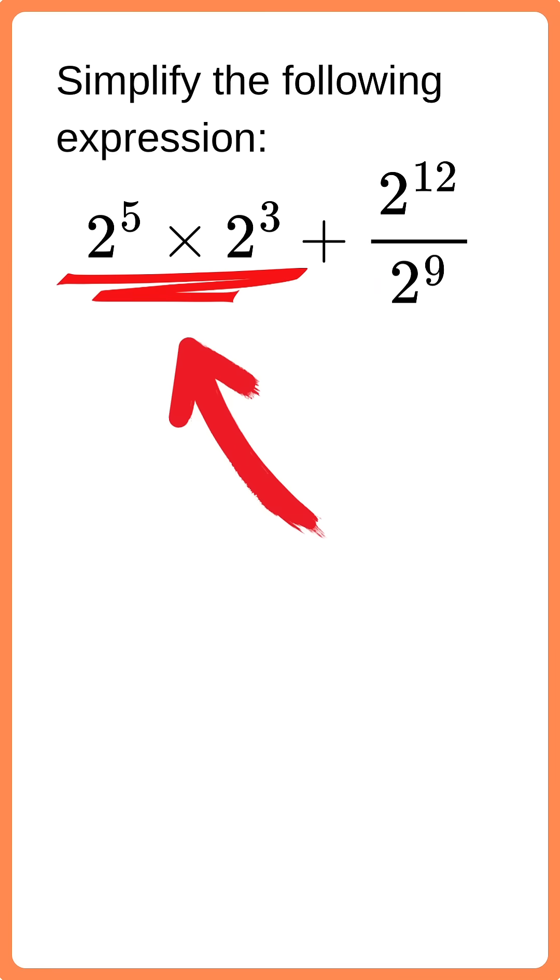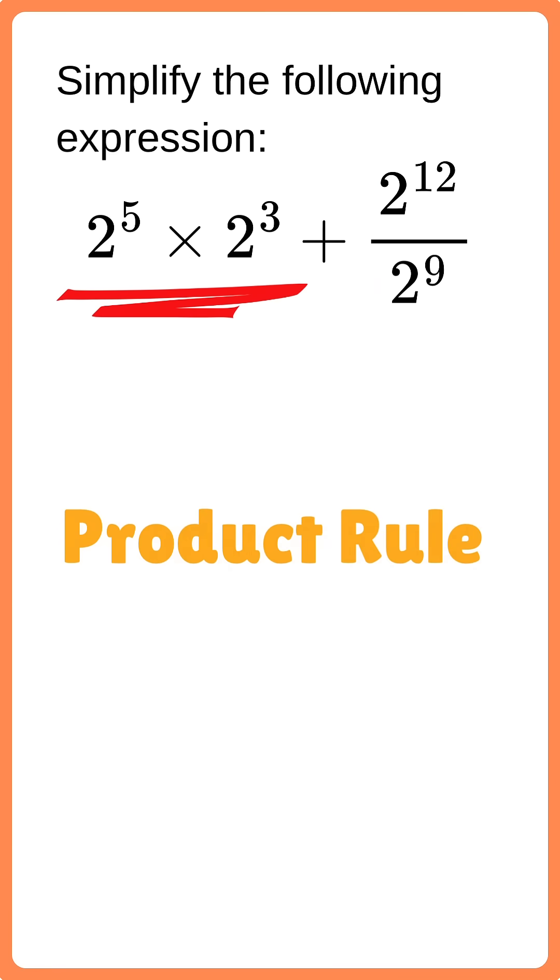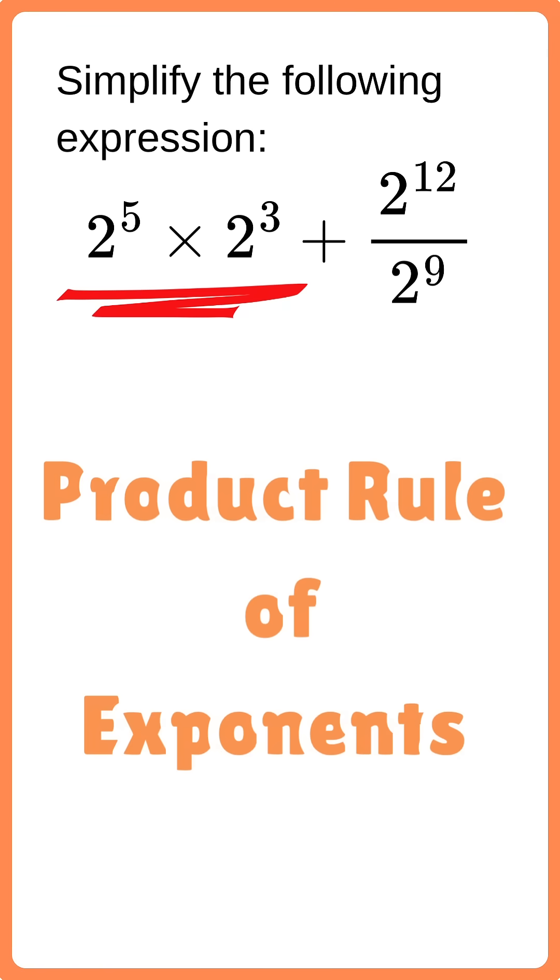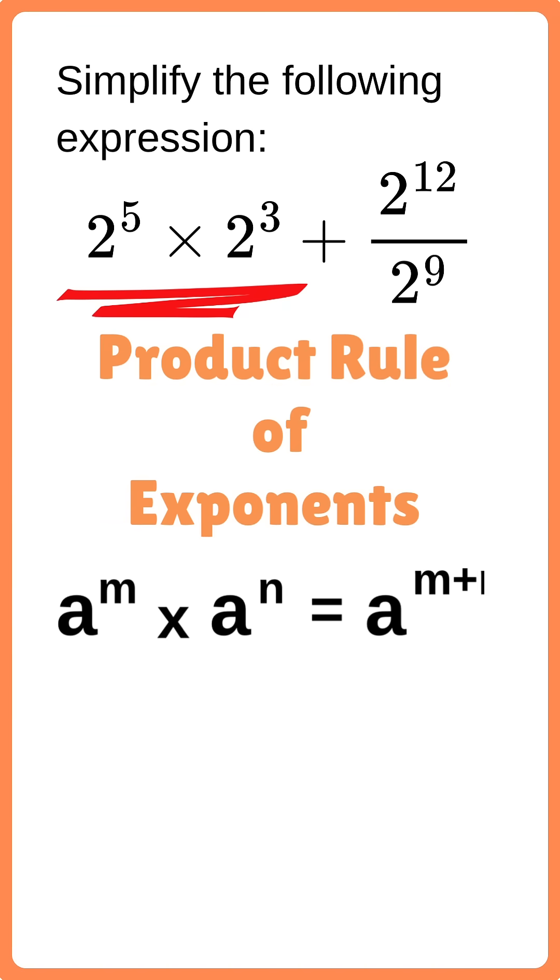For the first part of the expression, we'll need to use the product rule. The product rule of exponents states that a to the power of m times a to the power of n equals a to the power of m plus n.